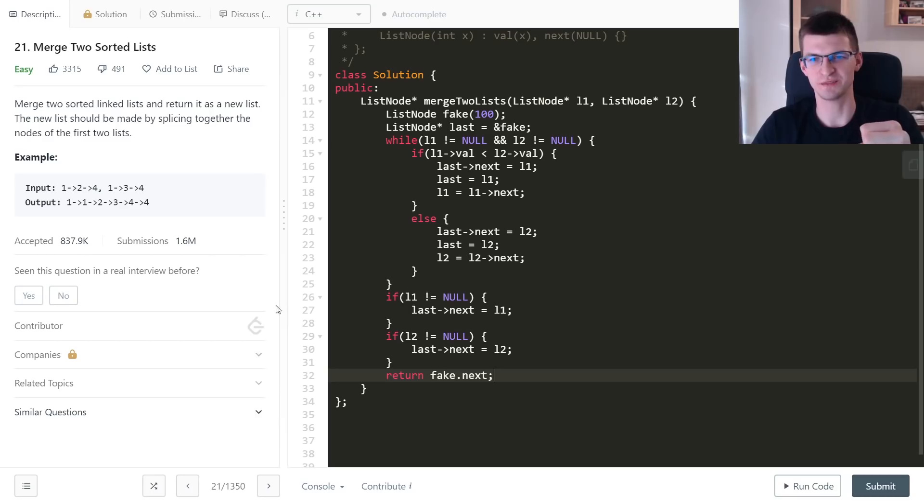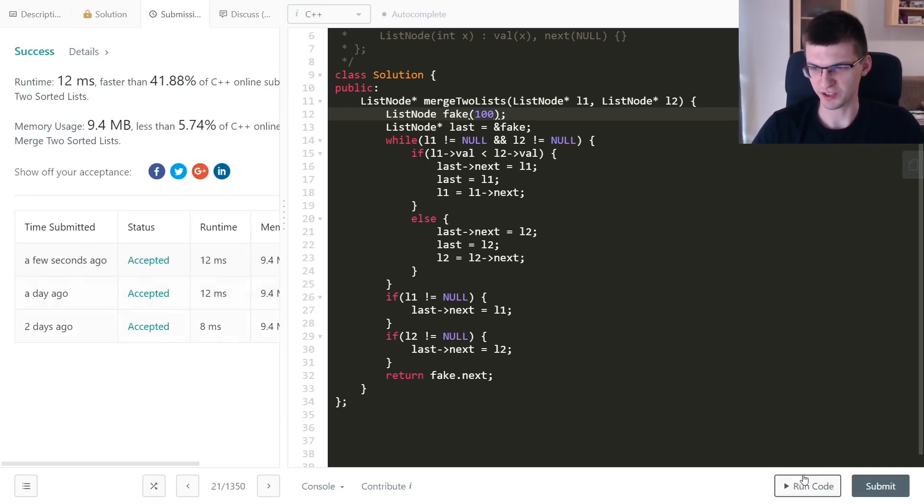This is enough to append something to the list we are creating and return fake.next. Fake has some value that doesn't matter here, 100, but we never compare the value in last with something else.